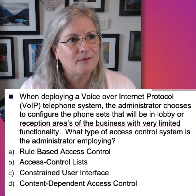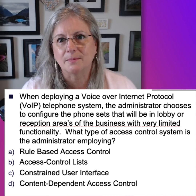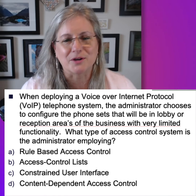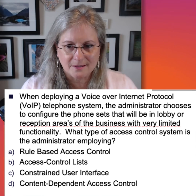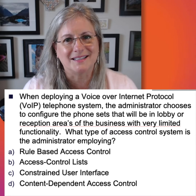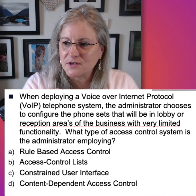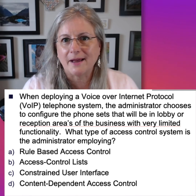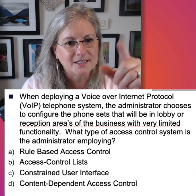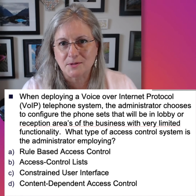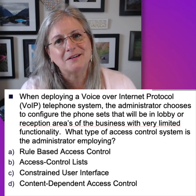Constrained user interfaces are going to limit the functionality. The most common example is ATM machines — a lot of them are still running Windows. If the user had full access on the keyboard at an ATM machine, there's a lot of danger. So we constrain that interface: zero through nine, clear, cancel, enter, pound, or on the screen you might have options like checking account, savings account, a few other options. We're restricting or limiting the functionality. So the right answer here is constrained interface.